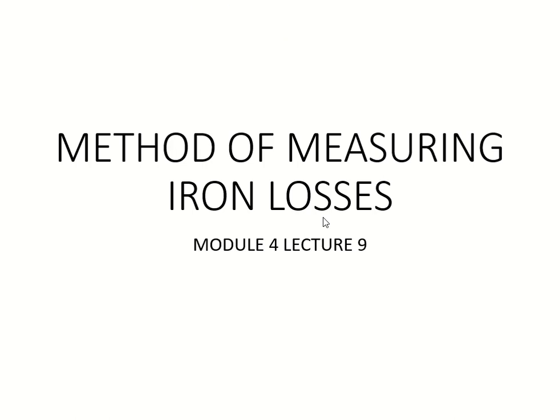Welcome dear students. This is lecture 9 of module 4. We will study a different method of measuring iron losses. We have already studied that there are two types of iron losses. If you give an AC supply to a magnetic circuit, there will be iron losses occurring. The two types of iron losses are hysteresis loss and eddy current loss.